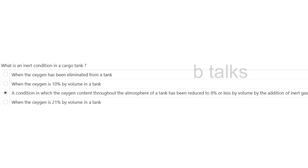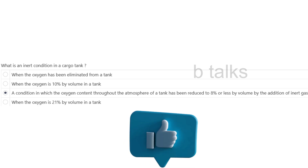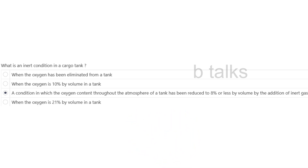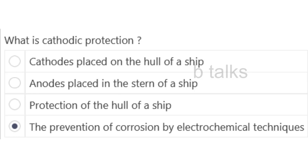What is an inert condition in a cargo tank? Options: When the oxygen has been eliminated from a tank; When the oxygen is 10% by volume in a tank; A condition in which the oxygen content throughout the atmosphere of a tank has been reduced to 8% or less by volume by the addition of inert gas; When the oxygen is 21% by volume in a tank. Answer: A condition in which the oxygen content throughout the atmosphere of a tank has been reduced to 8% or less by volume by the addition of inert gas.